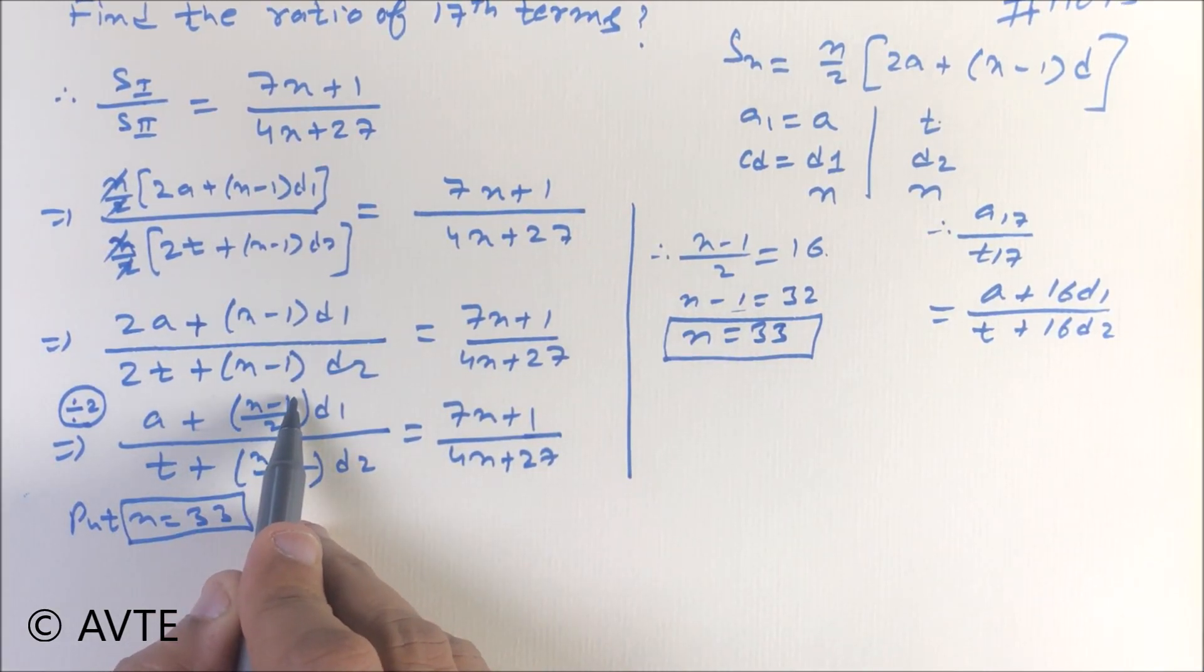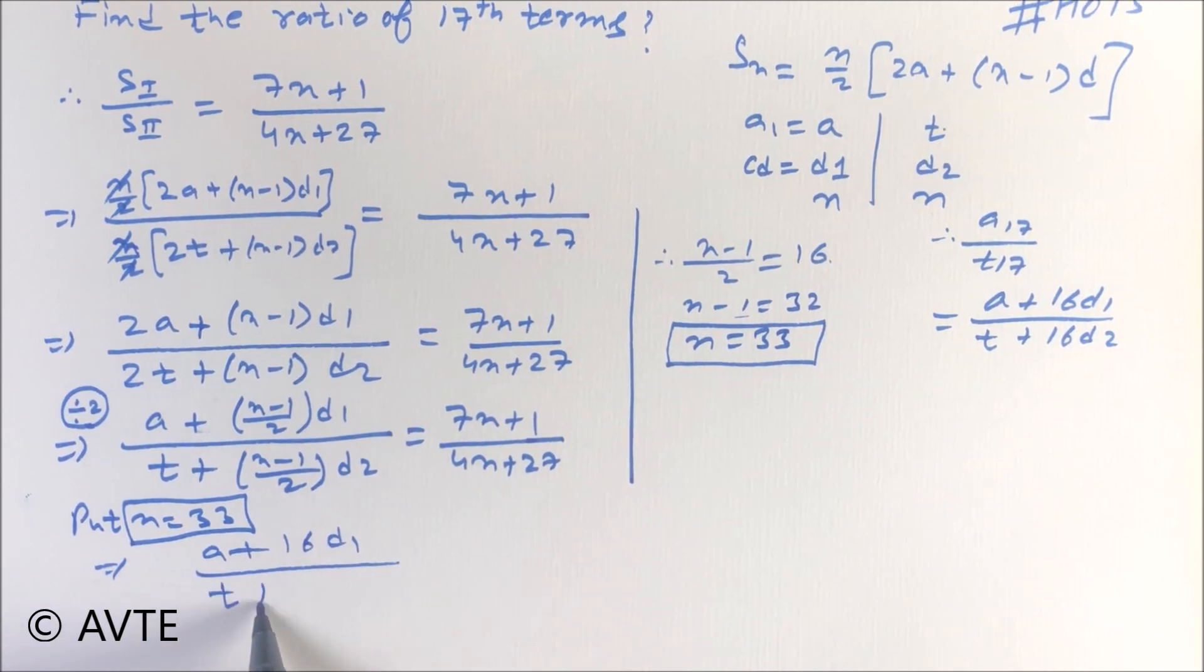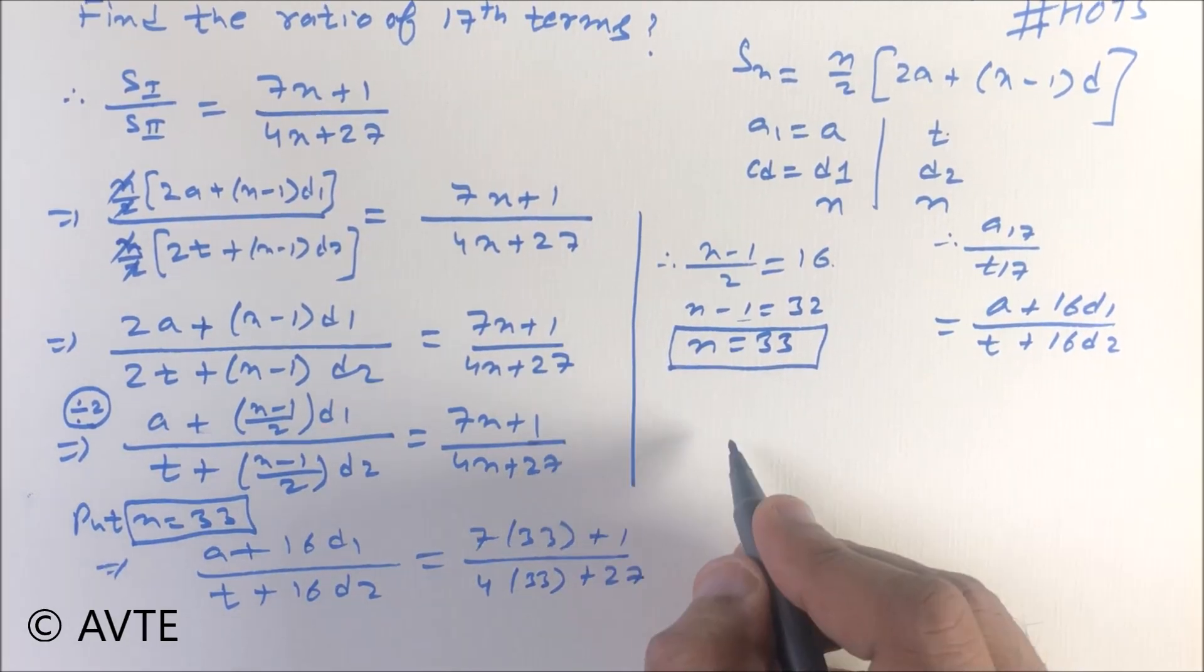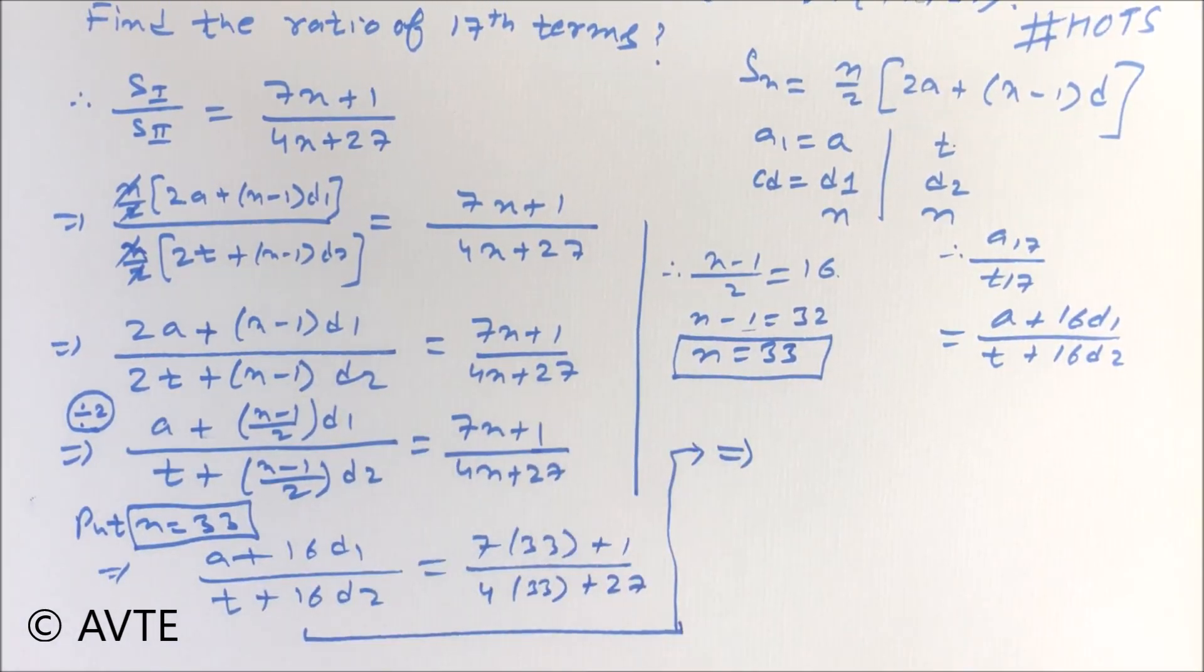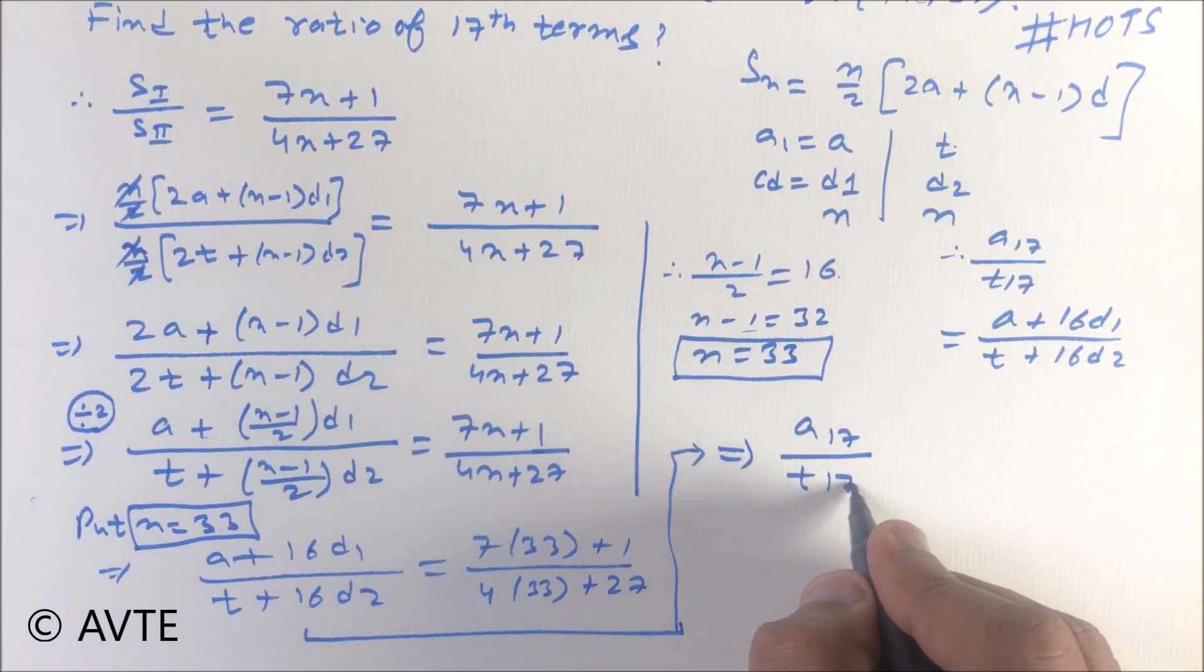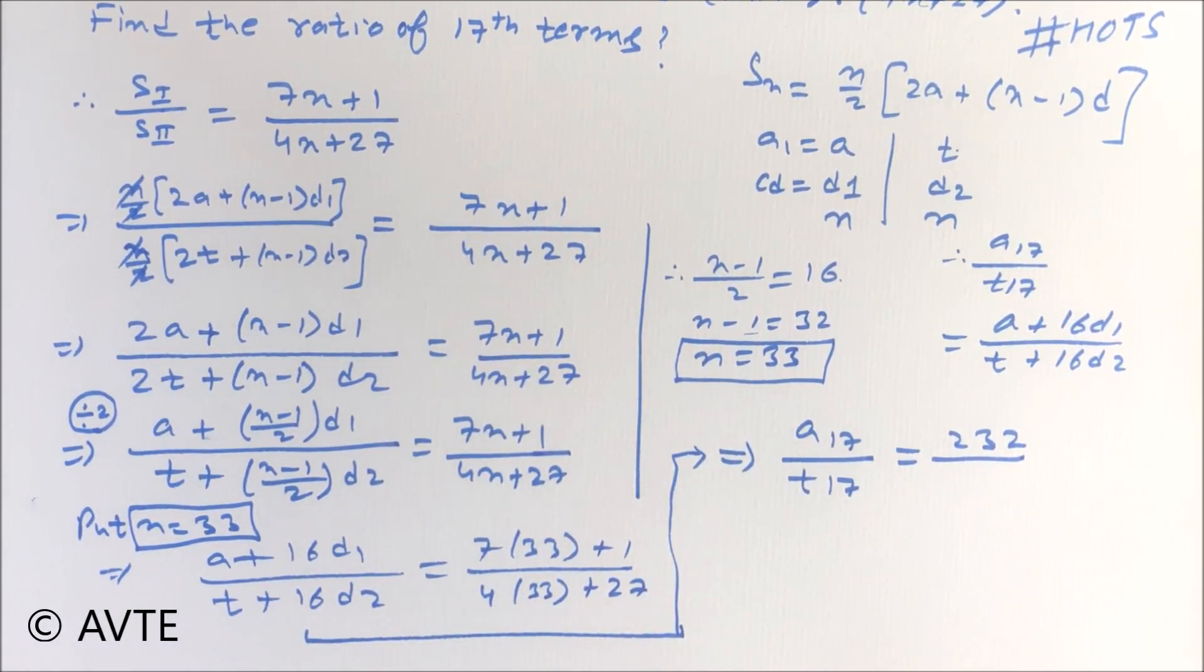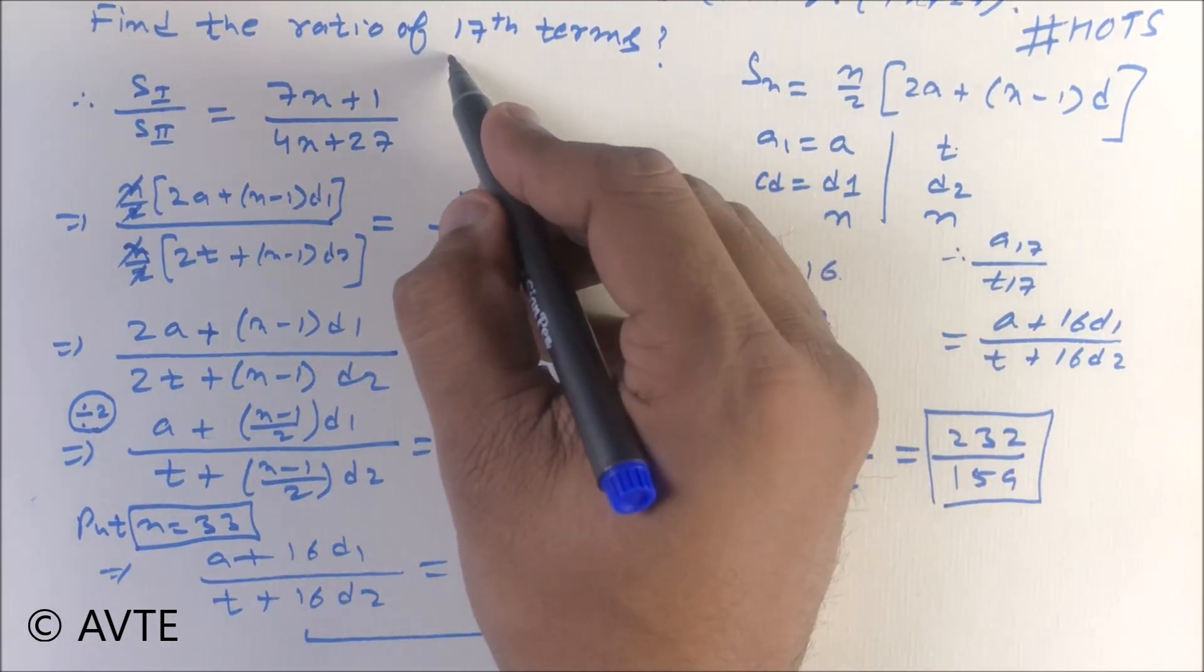a plus 16 d1 upon t plus 16 d2 is equal to 7 into 33 plus 1 and 4 into 33 plus 27. So friends, we'll go up a little. a plus 16 d1 can be written as a17 and t plus 16 d2 is written as t17. So your answer is 7 into 33 that is 231 plus 1 is 232, and 4 into 33 is 132 plus 27 is 159. So this is your ratio of their 17th term.